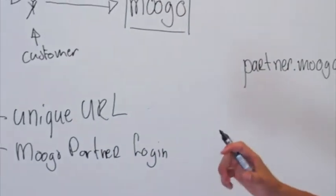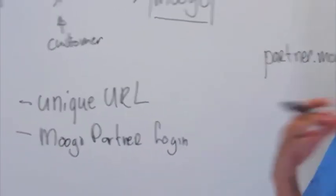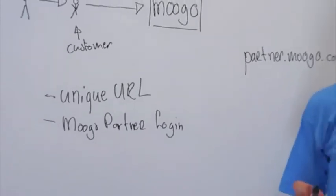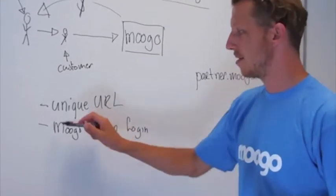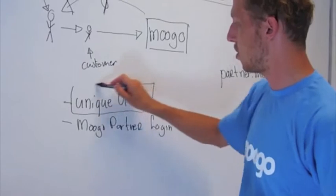Let's call that the Mugro Partner login. This Mugro Partner login will give you access to the back end where you can track how well your affiliate program is doing.